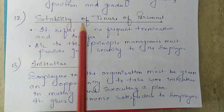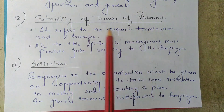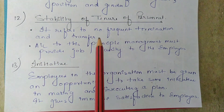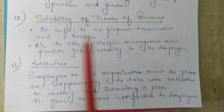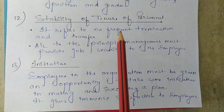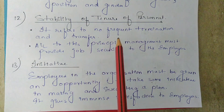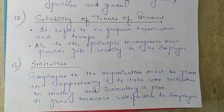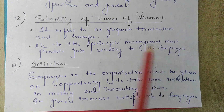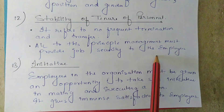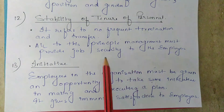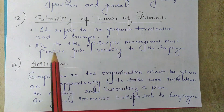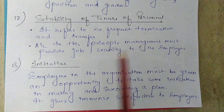The next principle is stability of tenure of personnel, which means there should be no frequent termination and transfer, because it takes time for a person to learn and get settled on a job. By the time he gets settled, he receives a transfer order — leading to wastage of resources. Job security must be provided to employees because with a feeling of insecurity, employees cannot contribute their maximum. Frequent turnover of employees is bad for the organization.